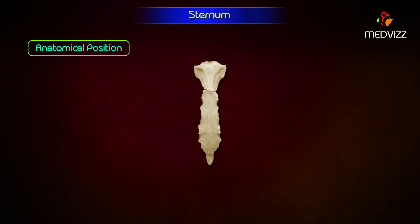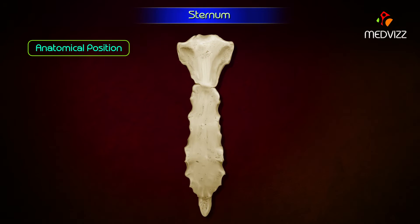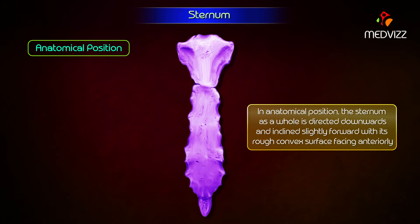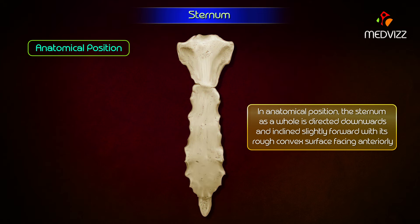Anatomical position. In anatomical position, the sternum as a whole is directed downwards and is inclined slightly forward with its rough convex surface facing anteriorly. Its broad end is directed upwards and the lower pointed end is directed downwards.